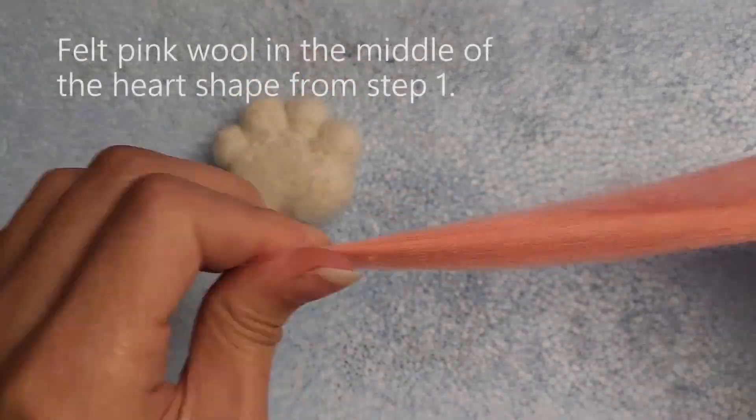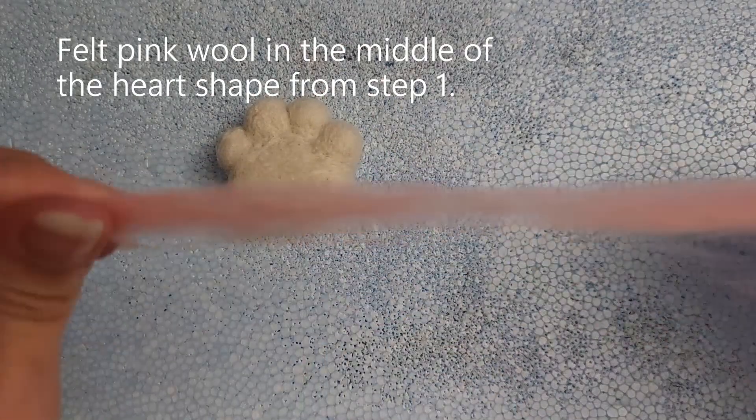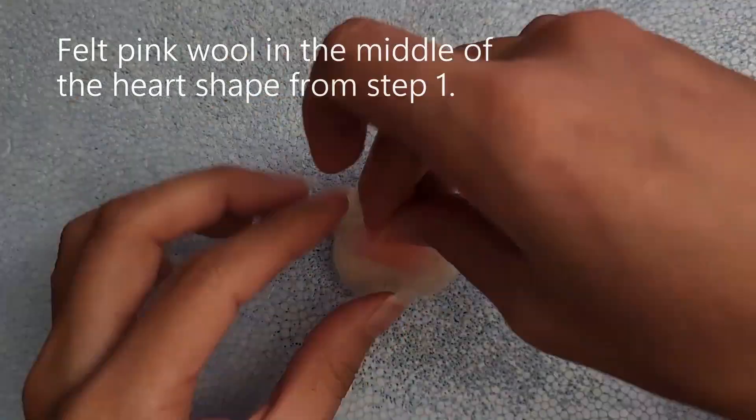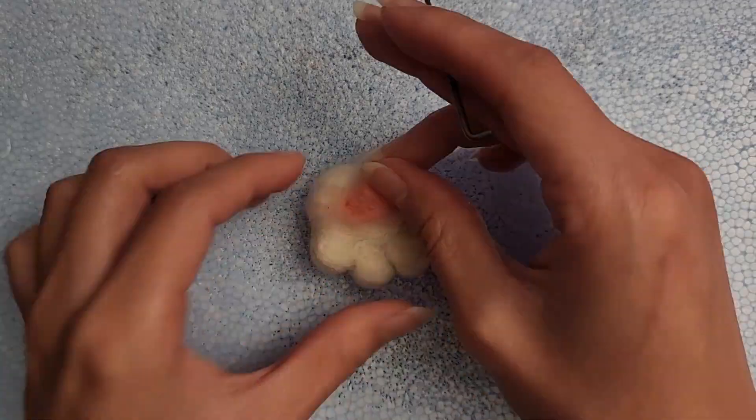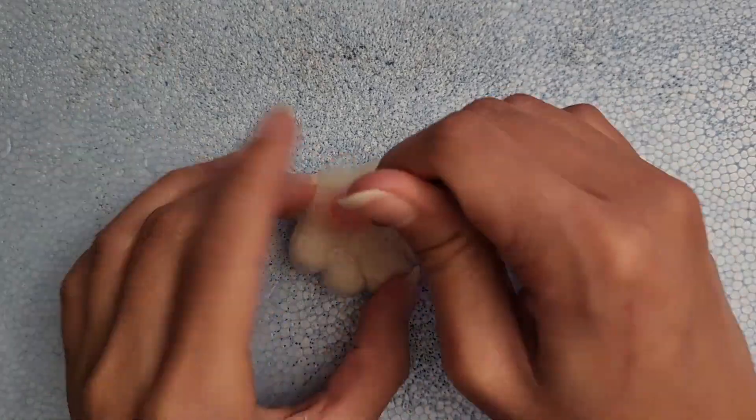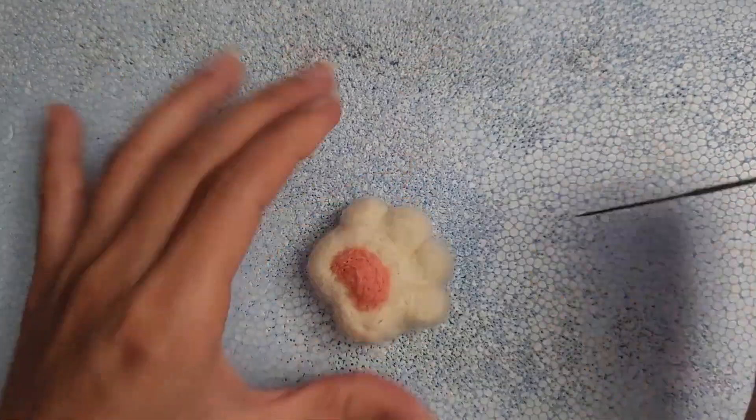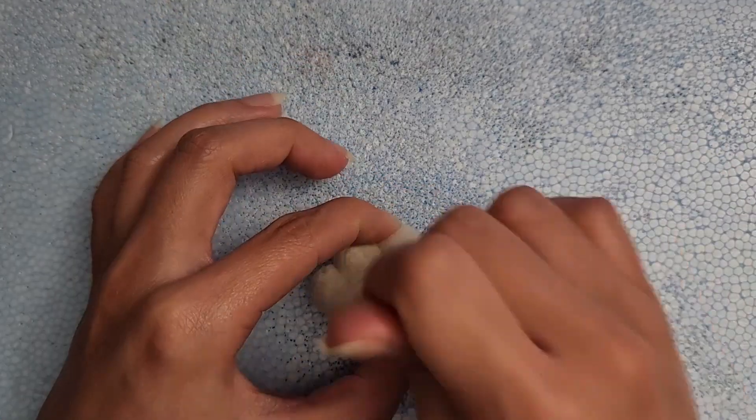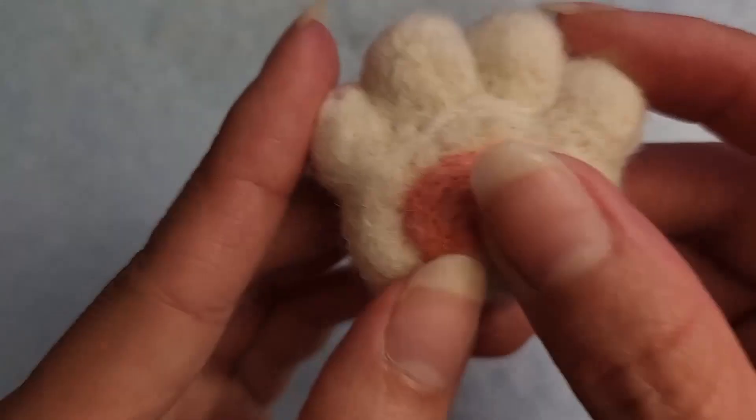In this step, you will be felting some pink wool in the middle of the heart shape from step one for the paw. This can be any shape you want but I'm making it into a slight oval shape. You can use a thin layer of pink wool and add more as you work to build up the volume.